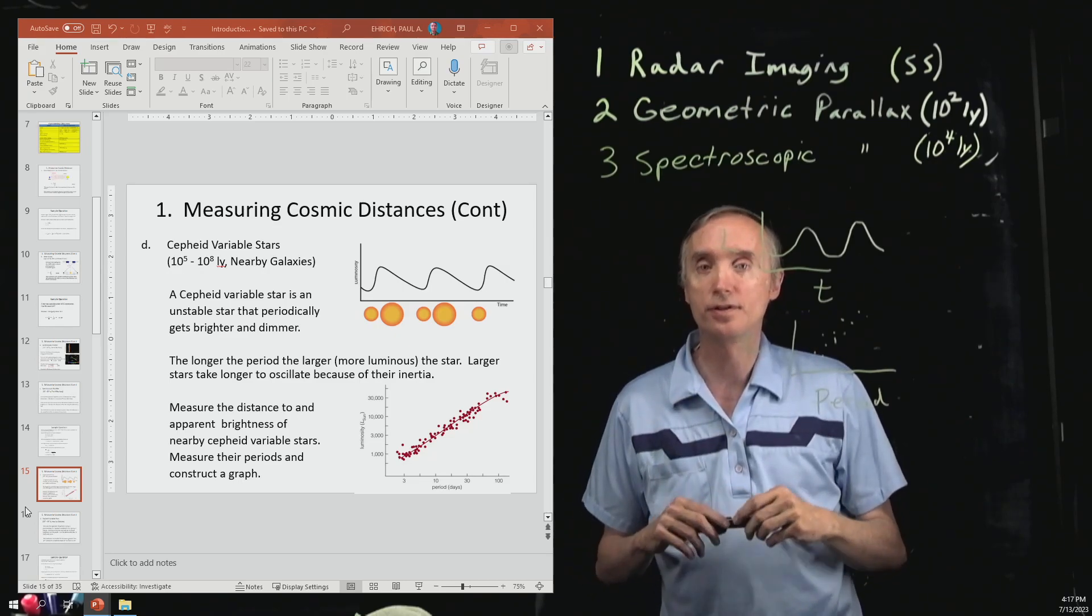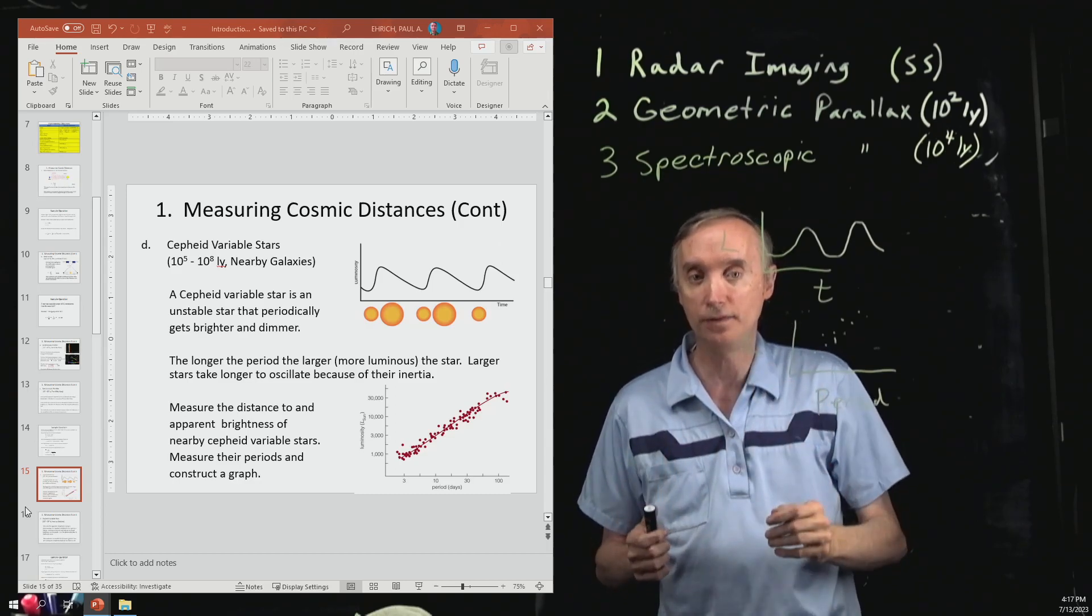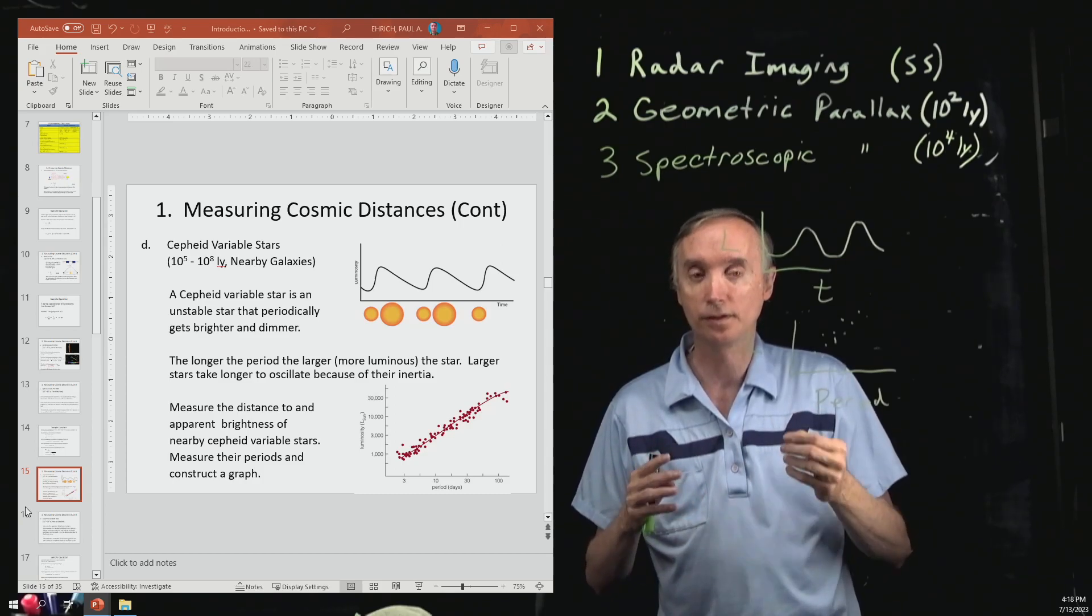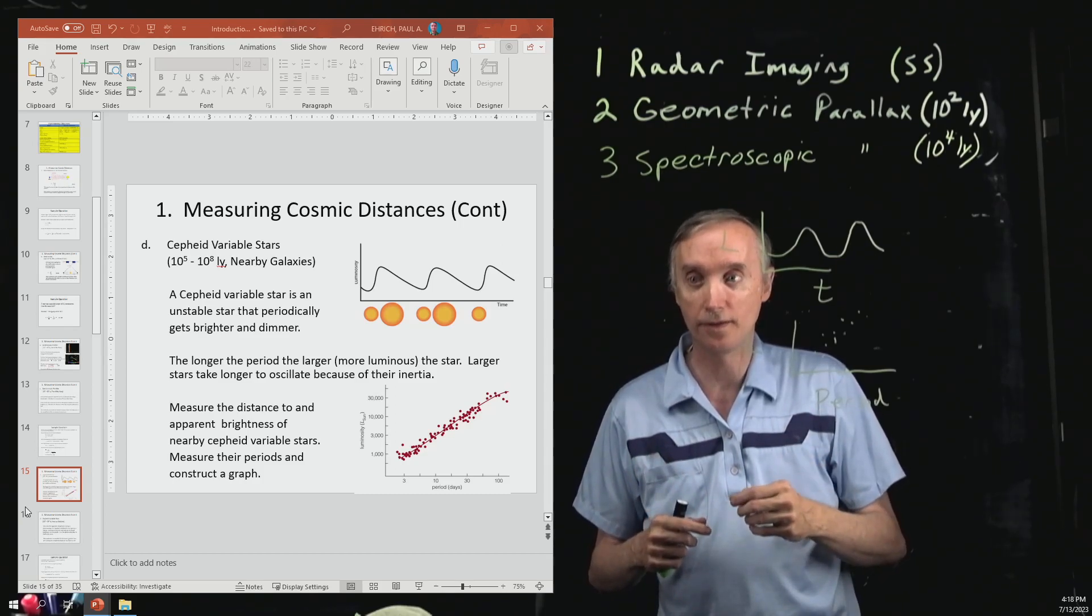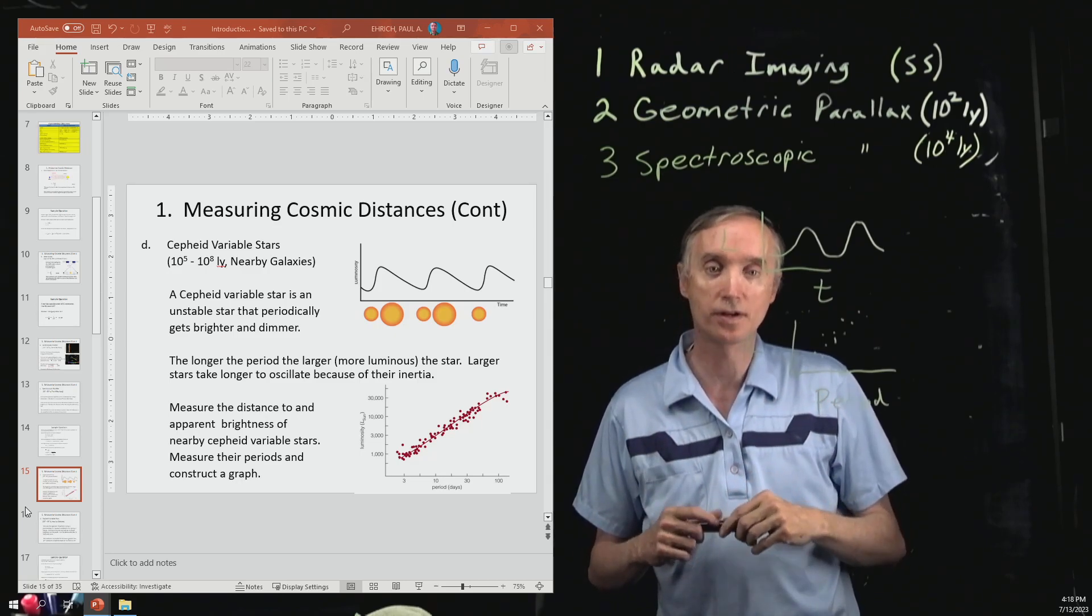And if you look, you'll notice that this technique is good out to 10 to the 8th light years. So that's going to be 100 million light years away, and we'll be able to measure the distances out to those kinds of objects.